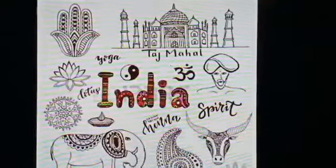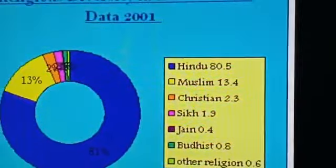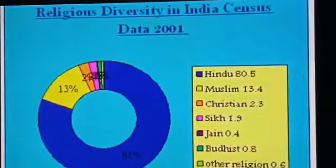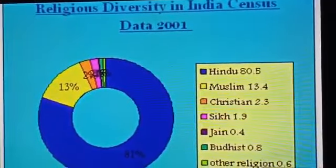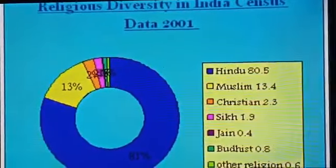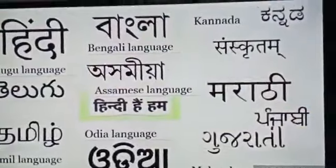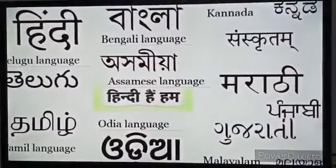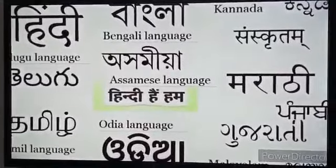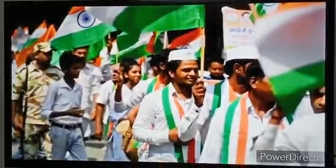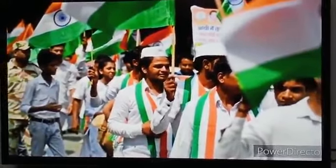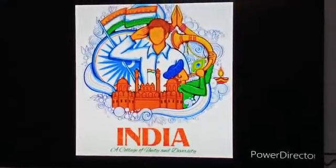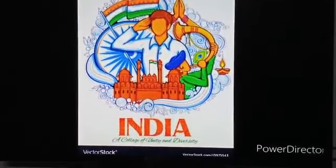India has Hinduism, Jainism, Buddhism, Sikhism and other religions — at least nine recognized religions, the major ones being Hinduism, Islam, Christianity, Sikhism, Buddhism and Jainism. It has more than 1,600 languages, with 22 major languages written in 13 different scripts and over 720 dialects. There are 3,000 castes and 25,000 sub-castes, each related to a specific occupation. This shows that India is an extremely diverse country.